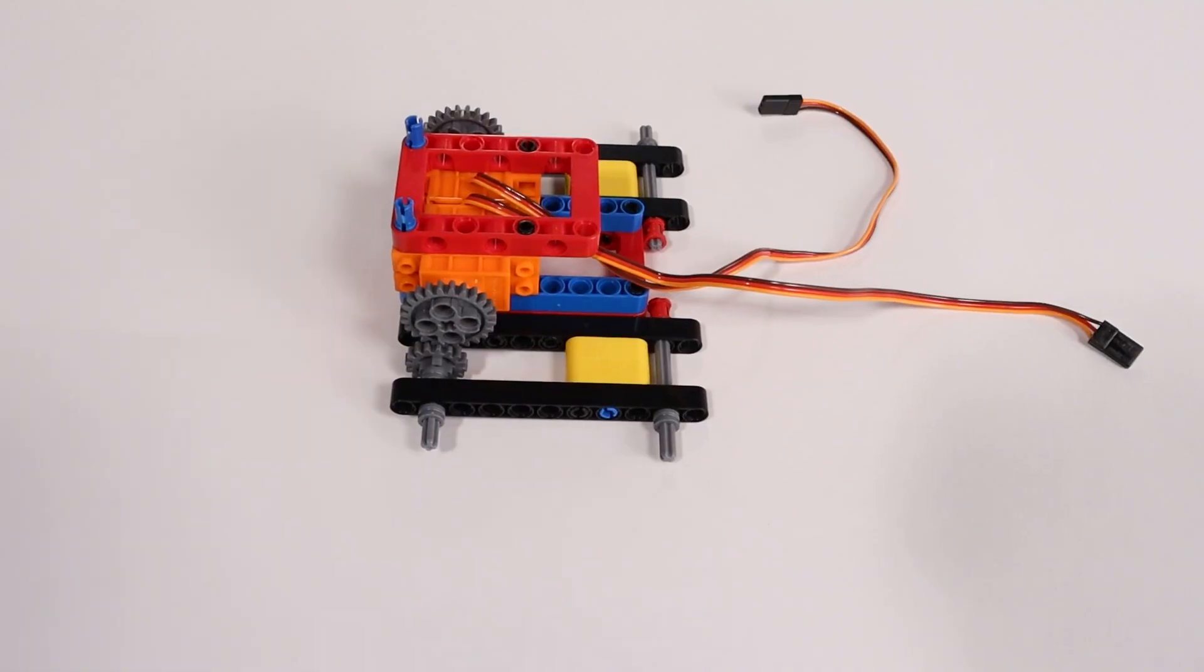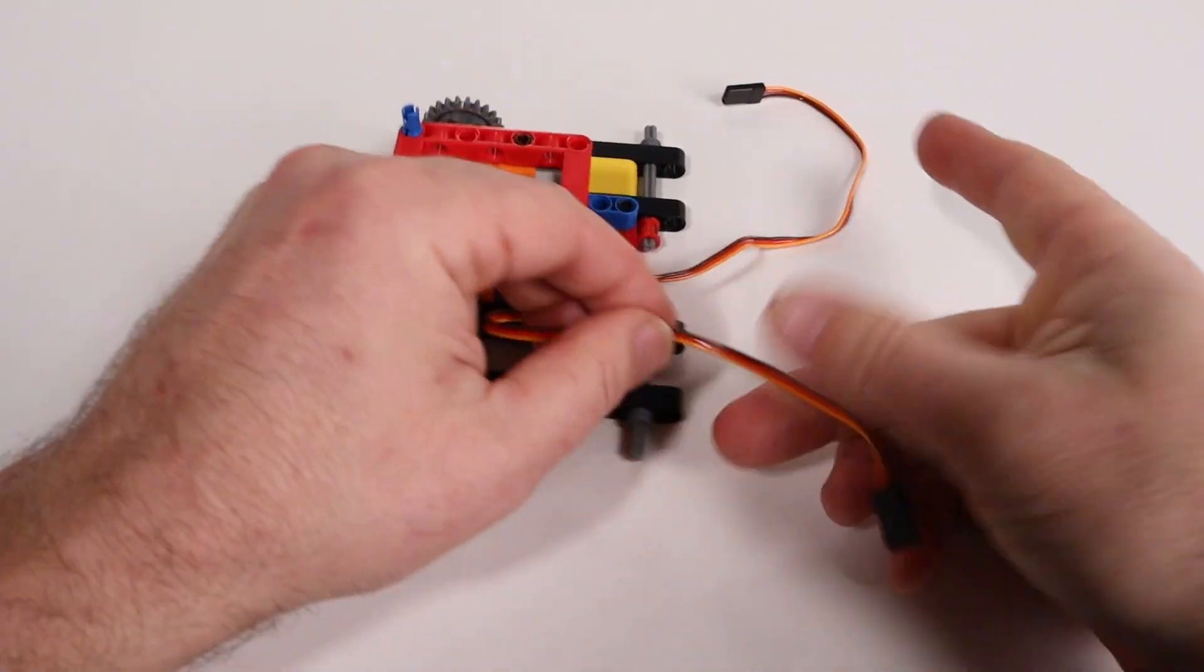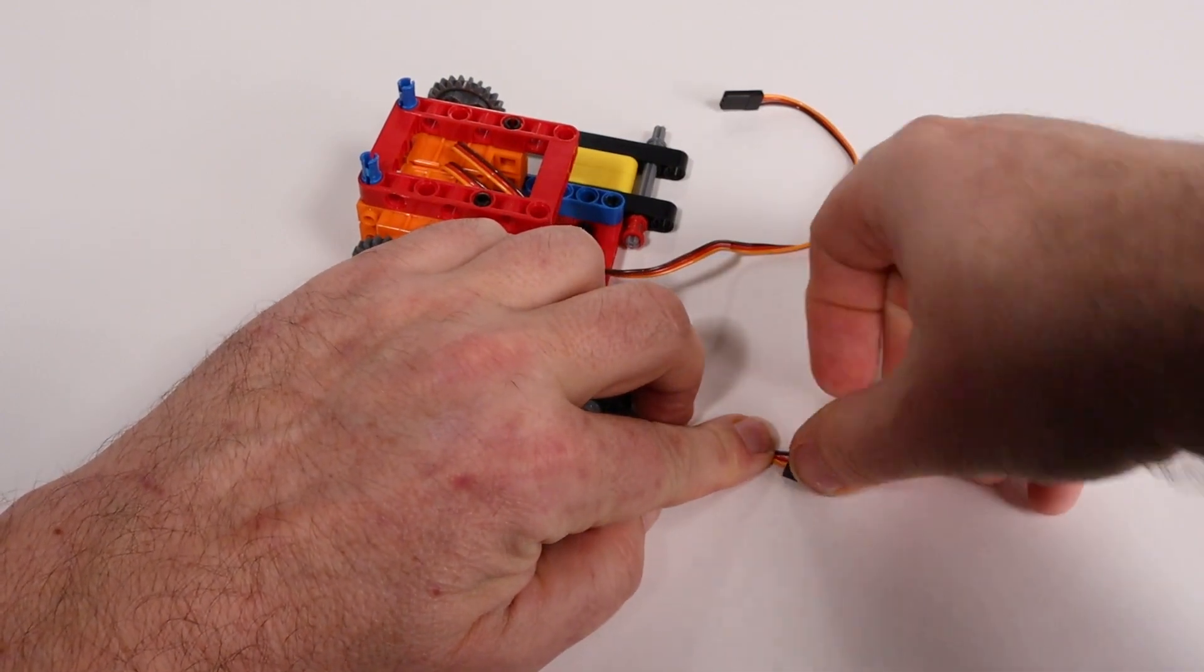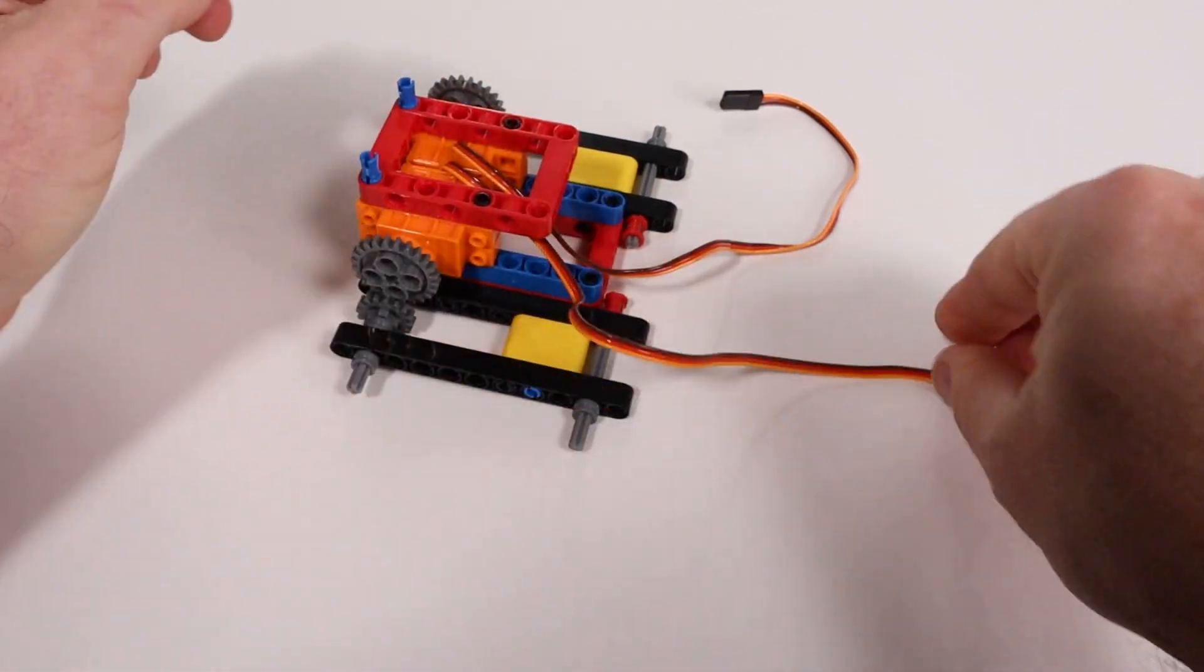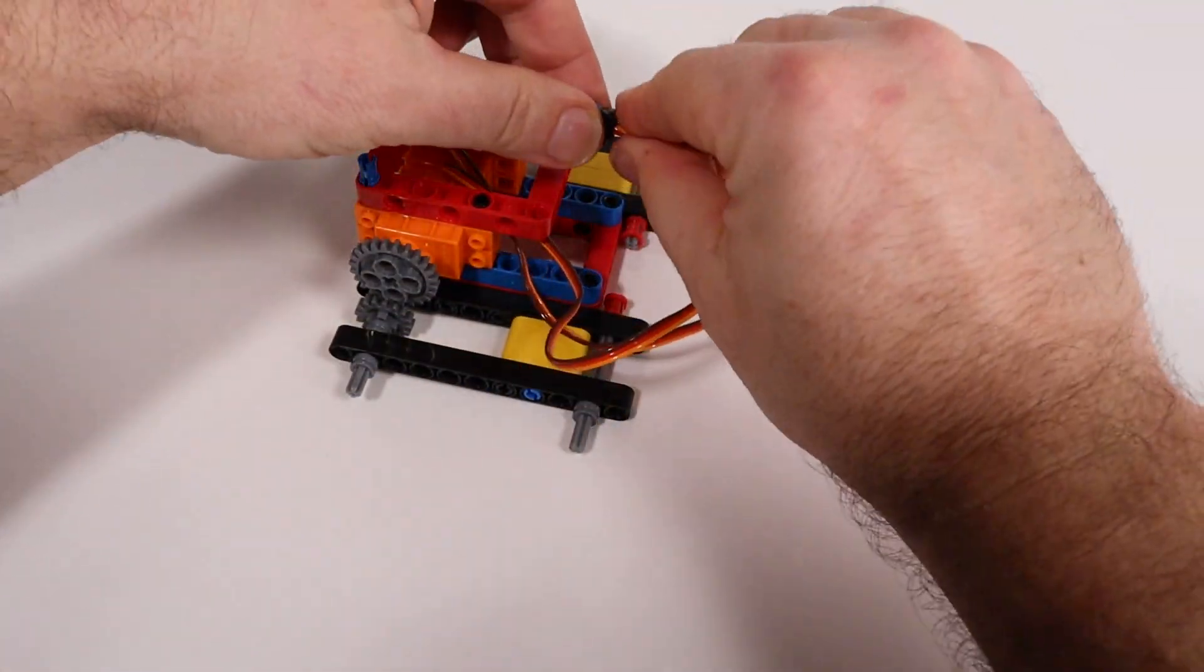As we proceed from here, it's easy to lose track of which servo goes to which servo connector. So what you might want to do is simply mark one of the connectors just to keep track of it. In this case, we're just putting a small piece of blue painter's tape onto the left servo connector.